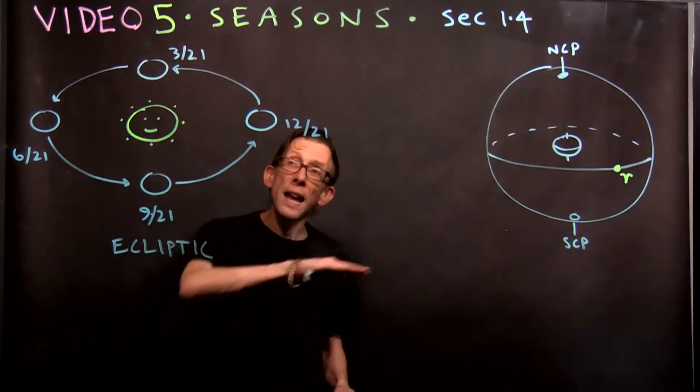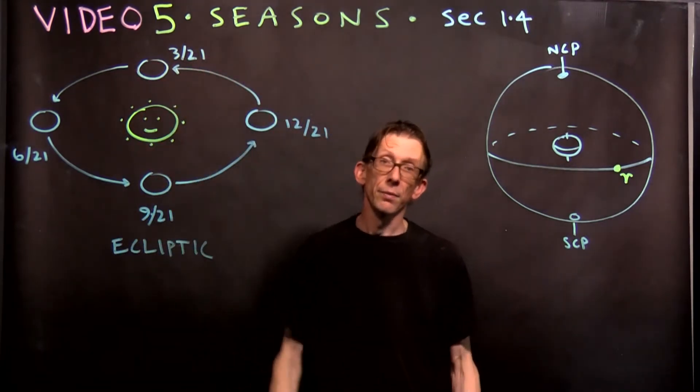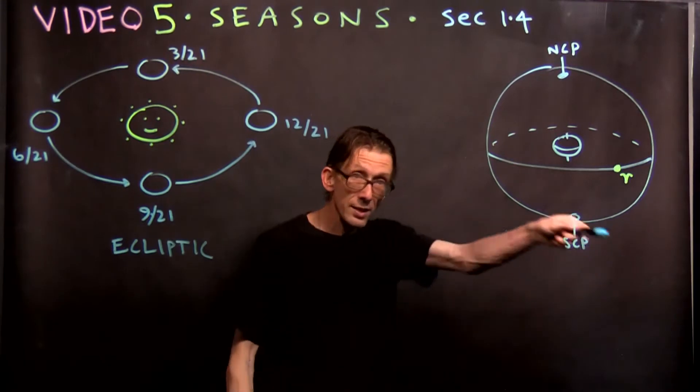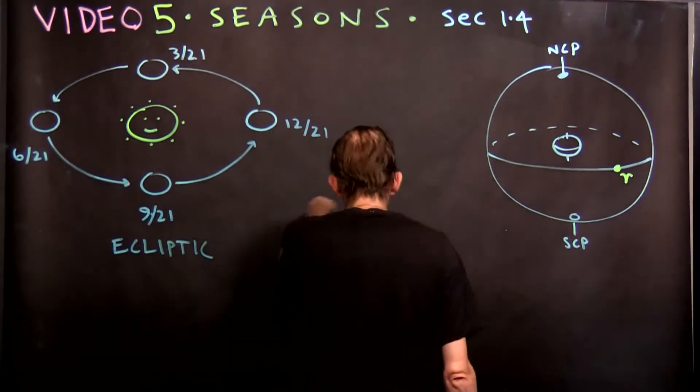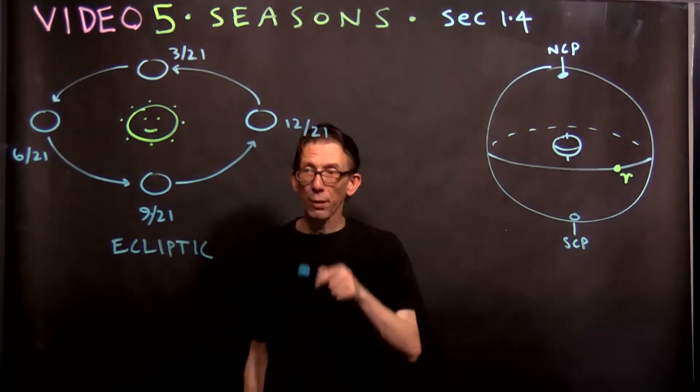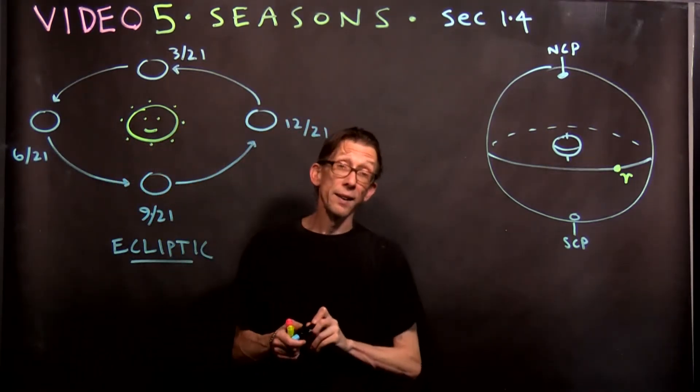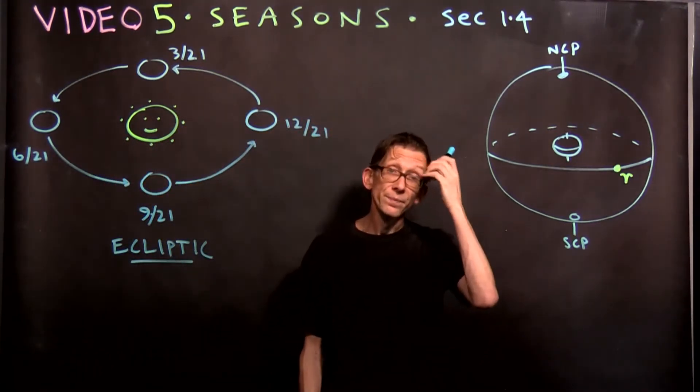That is the plane in which the earth orbits. It doesn't move up and down as it goes around the sun like this. It stays in a nice, flat plane as it orbits. That plane is known, lovingly, in astro land as the ecliptic.